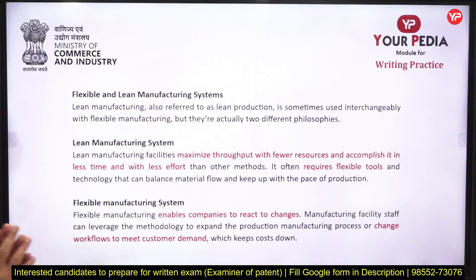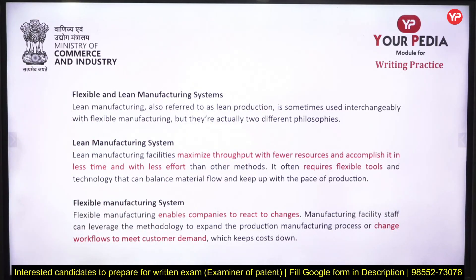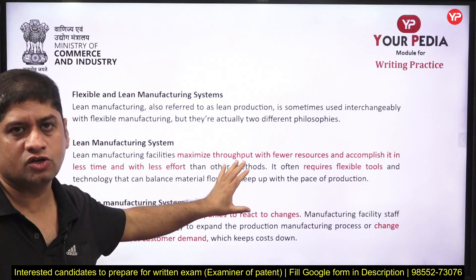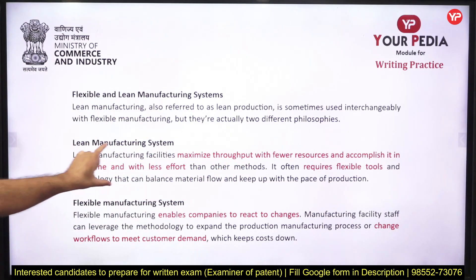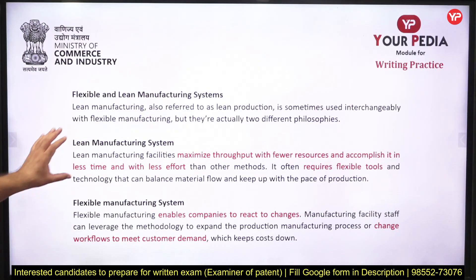Lean manufacturing — also called lean production — is sometimes used interchangeably with flexible, but actually both are different. Lean manufacturing is something which minimizes resources and cuts unnecessary things, so wastage is removed. Flexible tools are also required for lean, but the core idea of lean is that wastage must be removed.